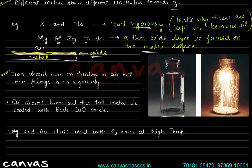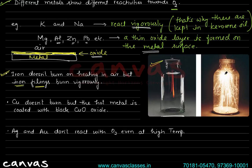For iron: iron does not burn when heated in air. But if iron is taken in powdered form or as very thin filings, it burns vigorously. So the physical condition of the metal — whether it is in powdered form or solid form — also affects its rate of reaction.